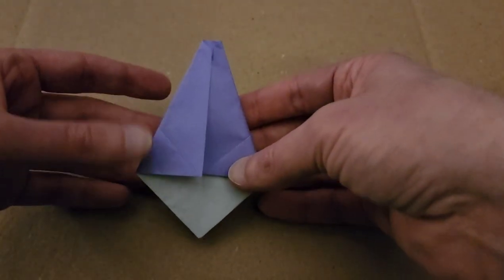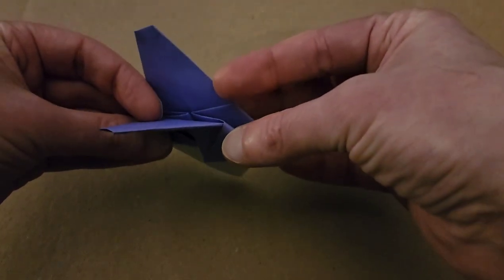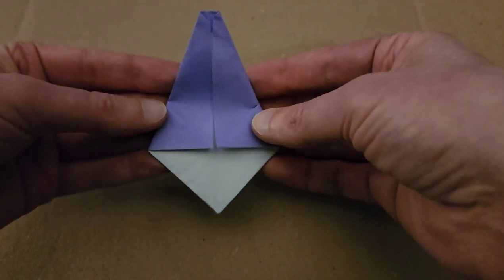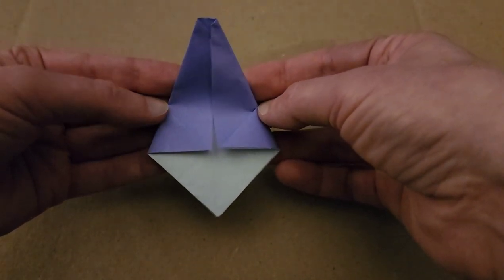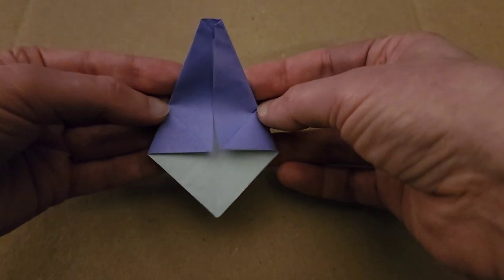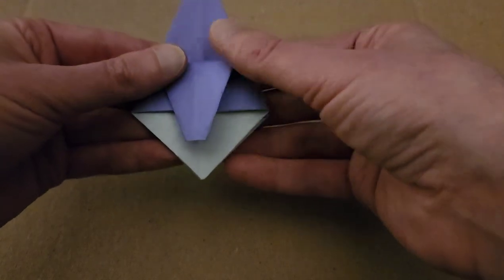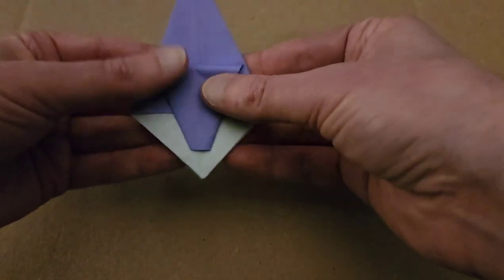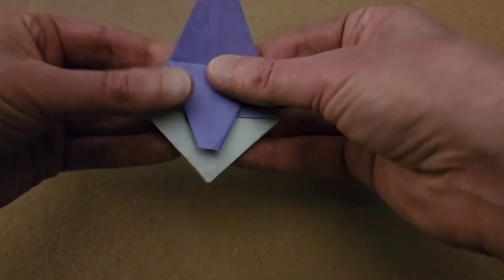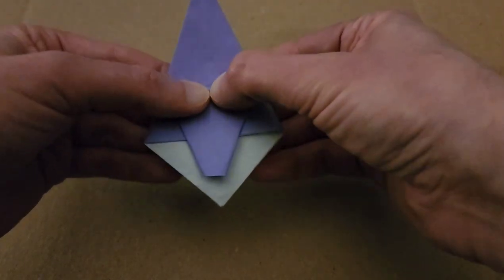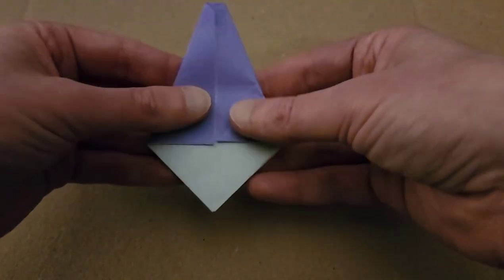All right, so we are almost done. At this point, we have these two flaps at the front and the back. So the front flap, fold it down so that it's along this point and this point where my thumbs are. So just fold it straight down. There we are.